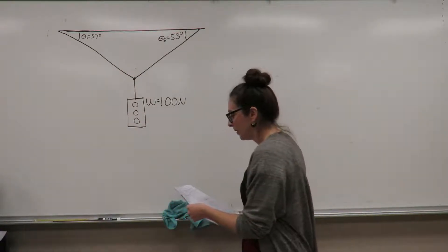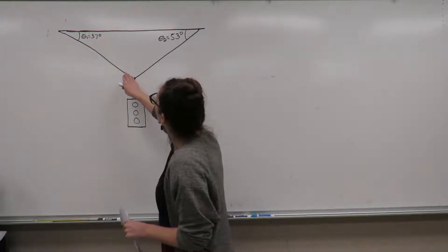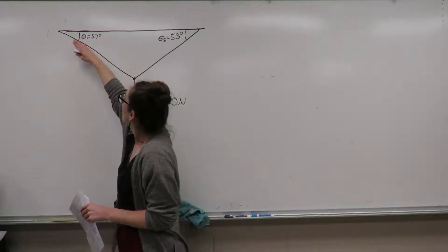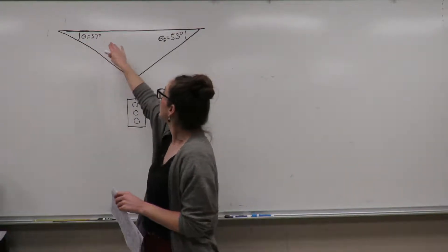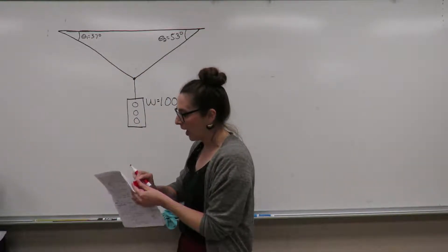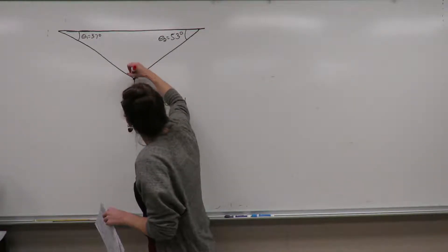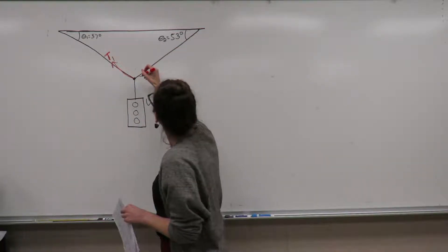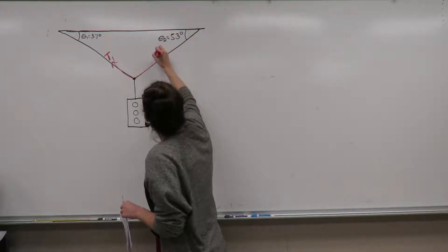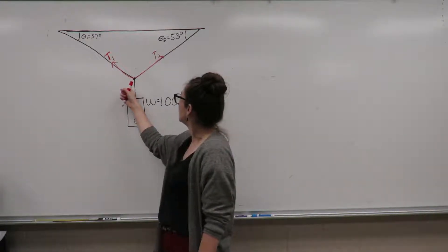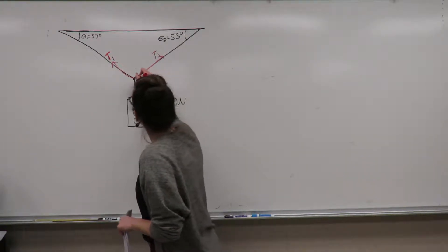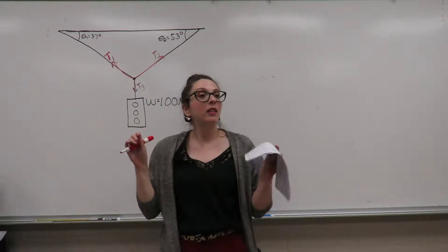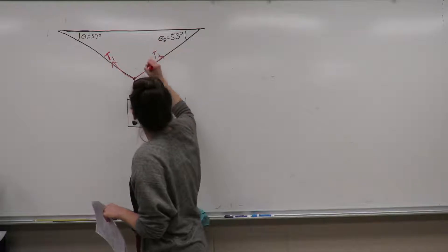I'm going to label the tension of this cable — the cable that is going and attaching to the ceiling with an angle of 37 degrees — I'm going to call that tension one. And I'm going to call the tension in the other cable over here tension two. And then I'm going to call the tension in this cable right here tension three.